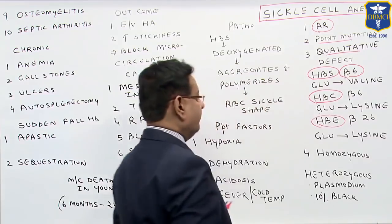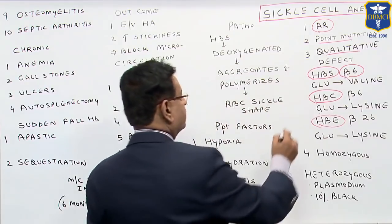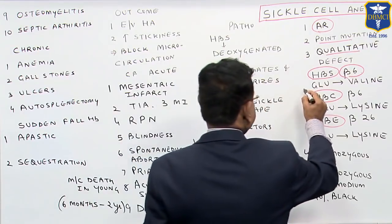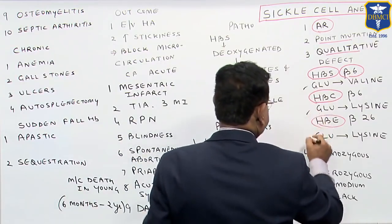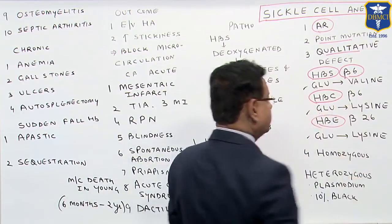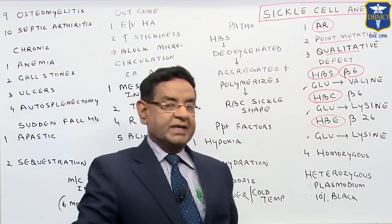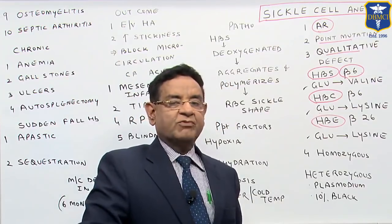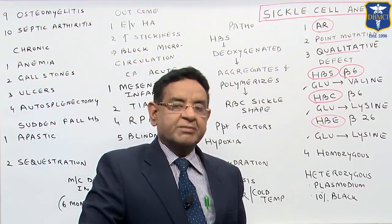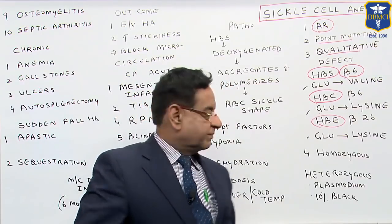So, everywhere it is glutamate which is being replaced by either valine or lysine, and the chain involved is the beta chain.